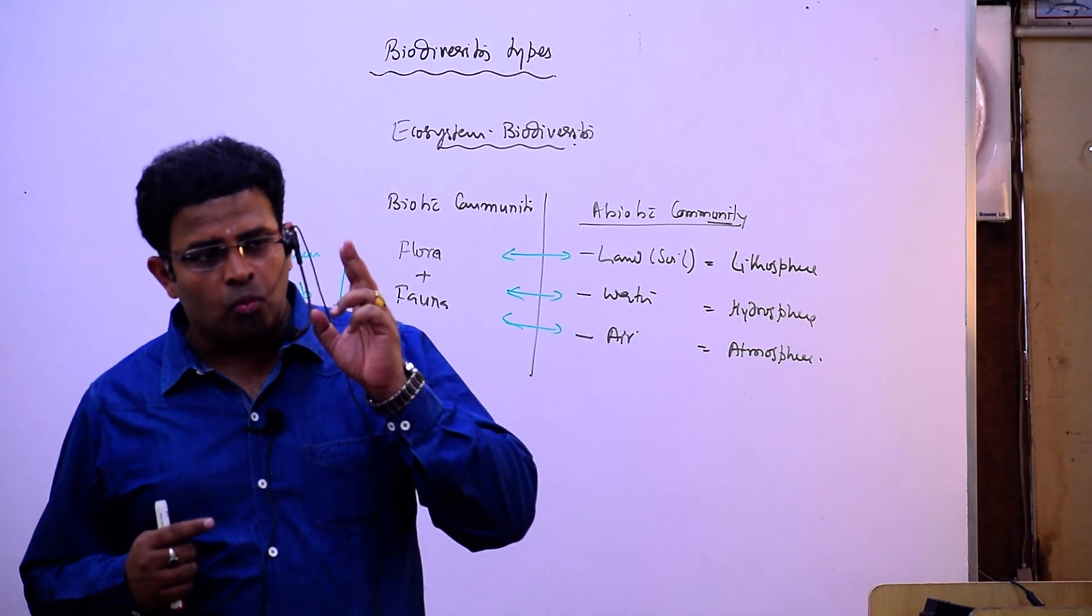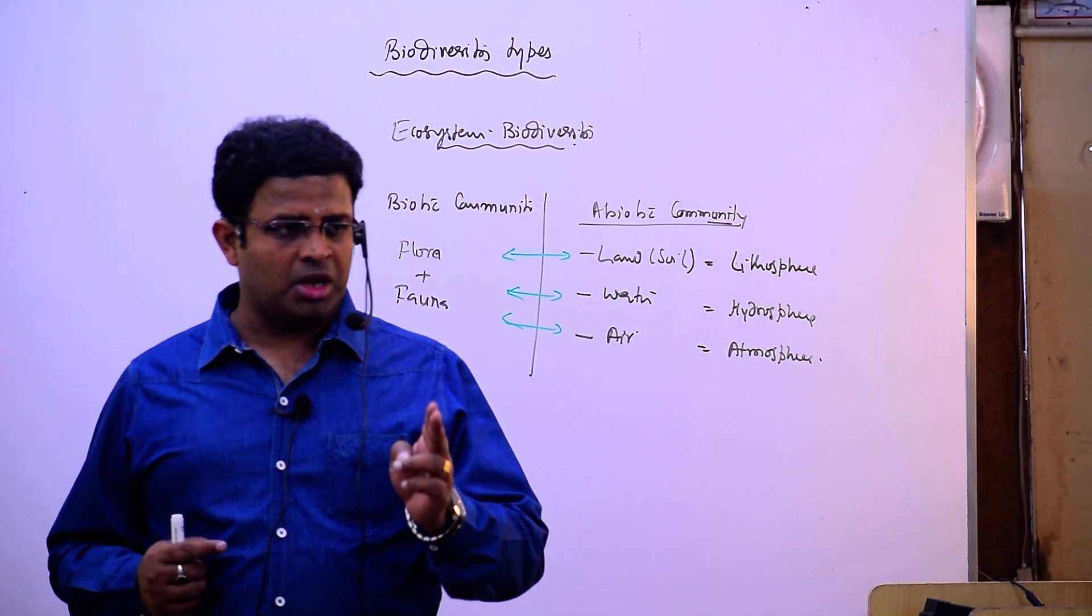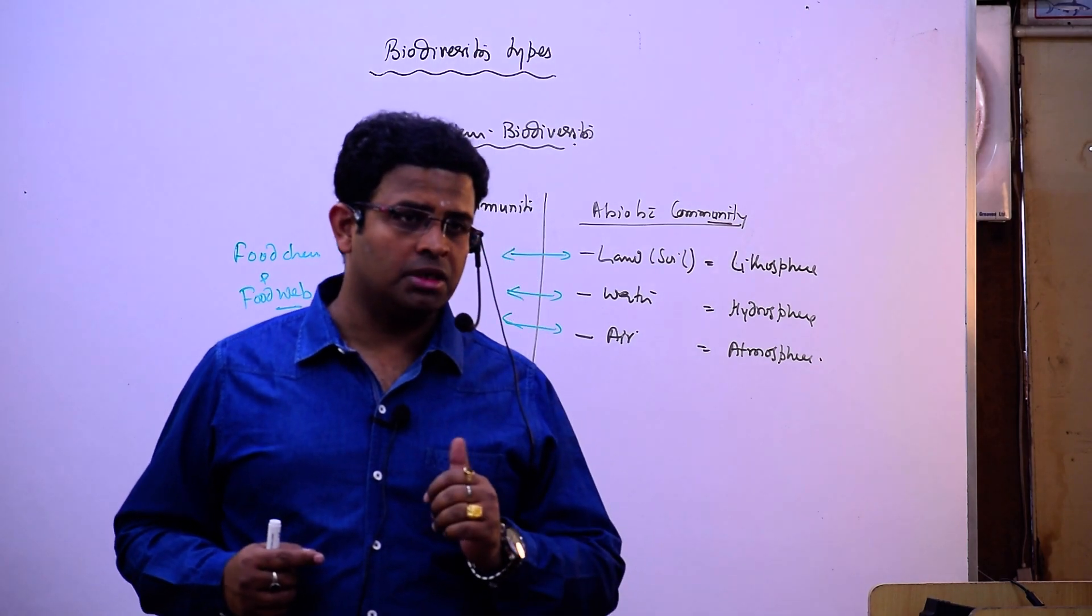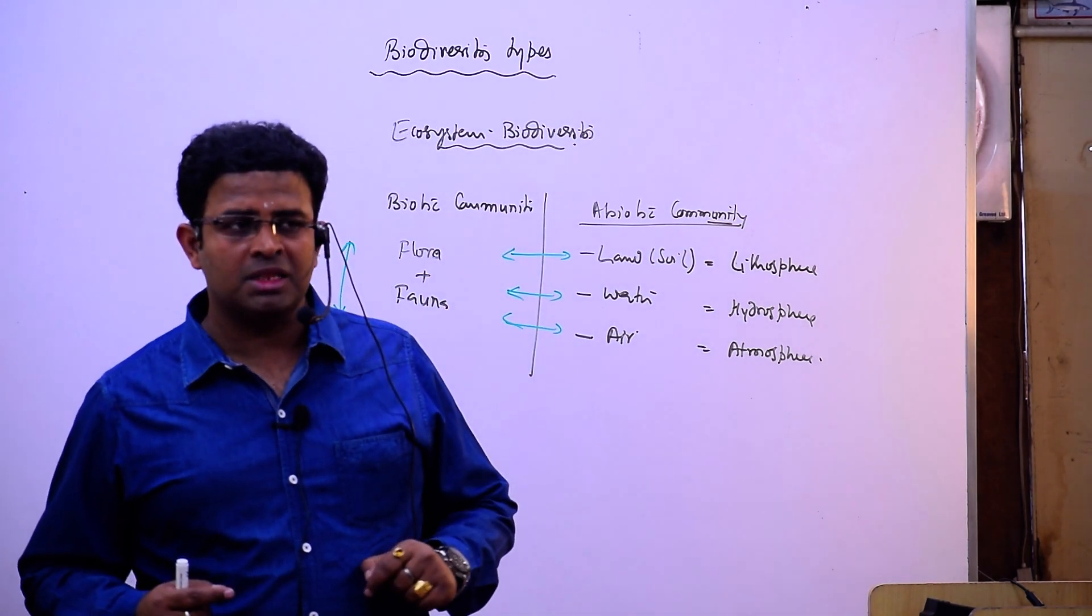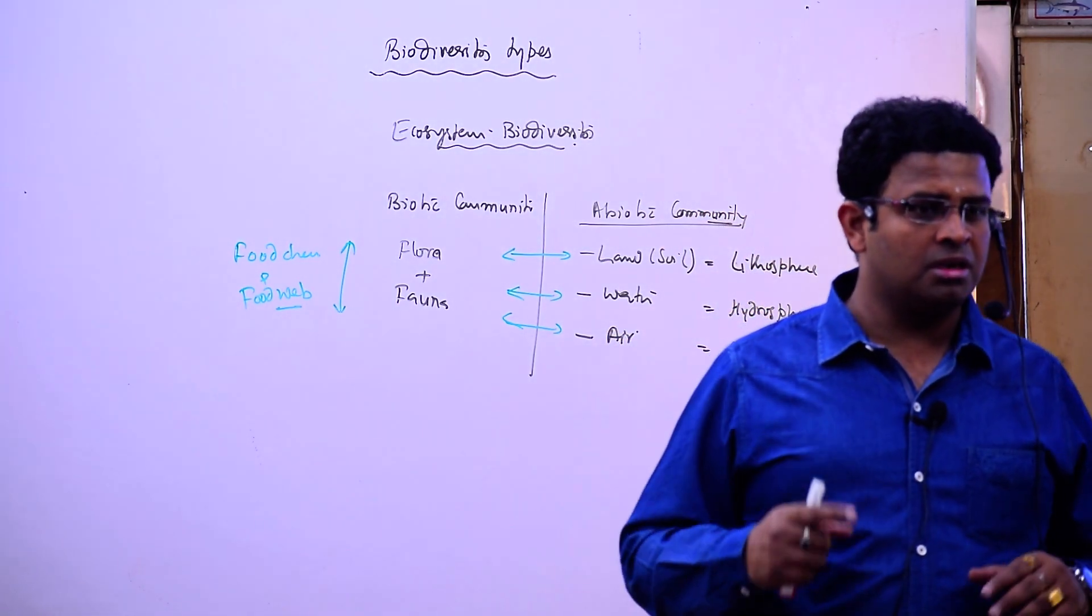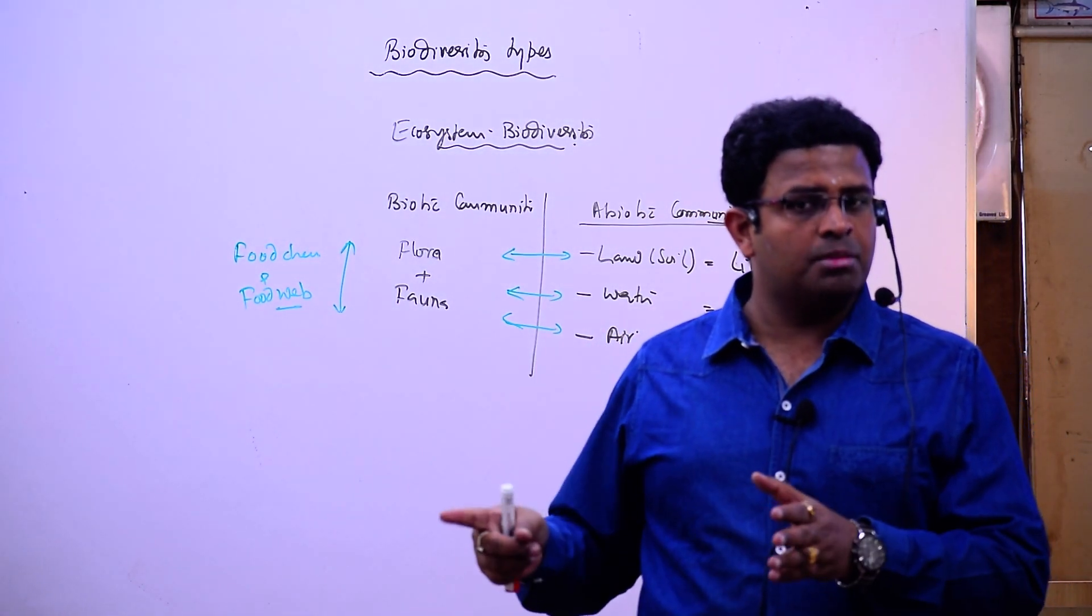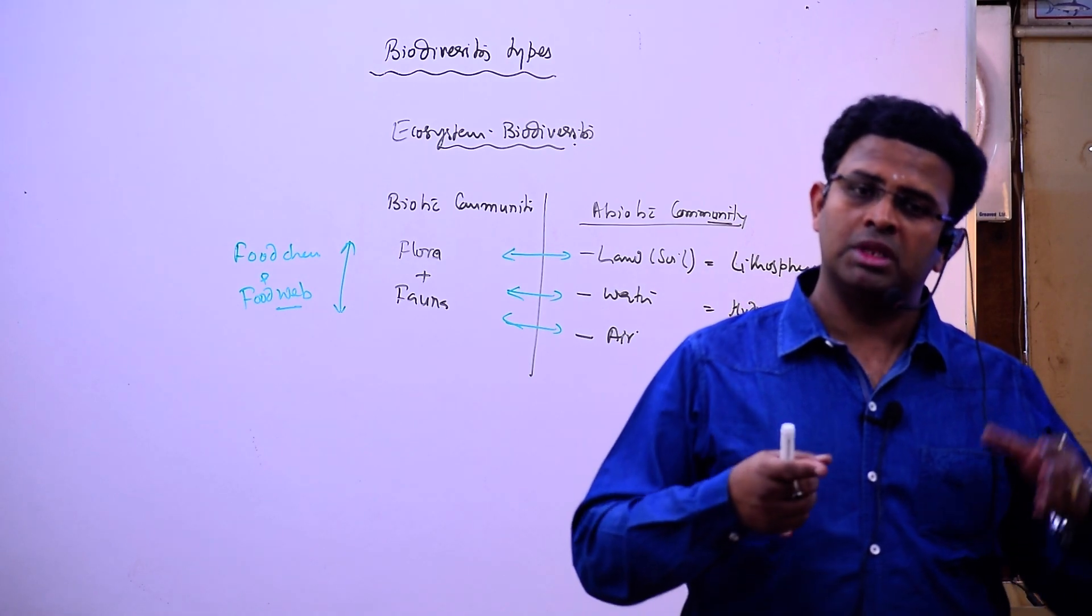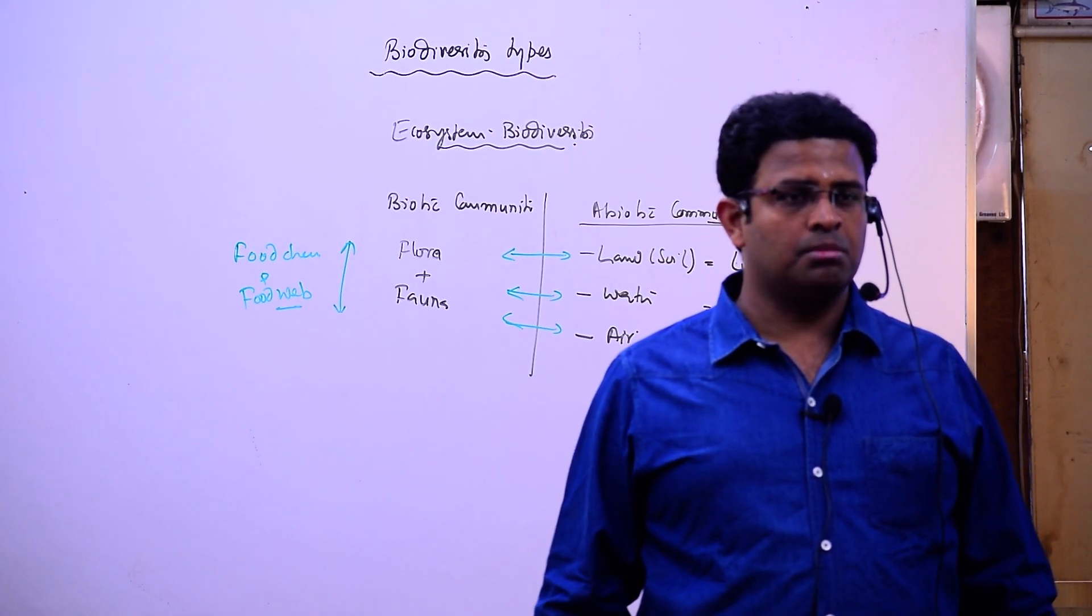Biodiversity - a single species may have more biodiversity. On this basis, if we have 16 lakh plant and animal species, genetic biodiversity will be much more than species biodiversity.